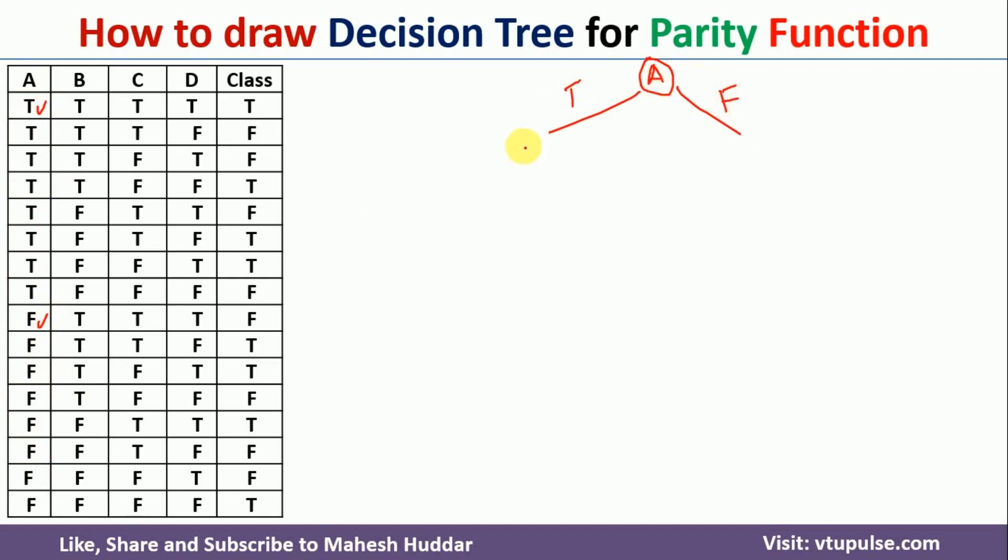Now, when A is true or when A is false, we need to look at the next one, that is the next possibility is B here. So what B can be? B can be either true again or it can be false over here.